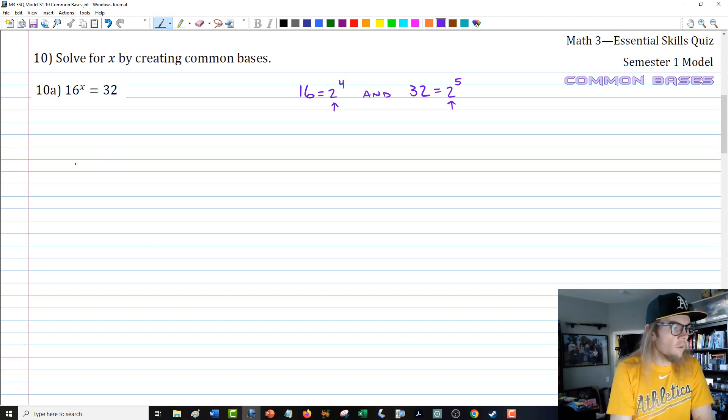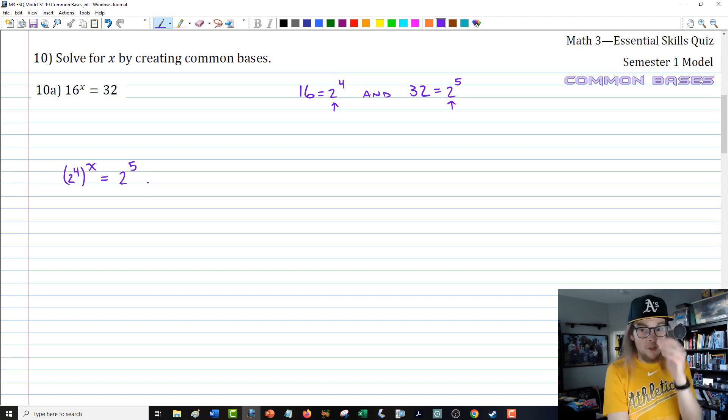So here's what we got. We have 16 to the x equals 32. What I'm thinking as I get started here is the fact that 16 is equal to 2 to the fourth power and 32 is equal to 2 to the fifth power. That's super essential because they have common bases.